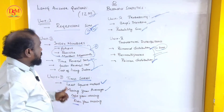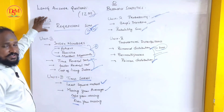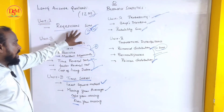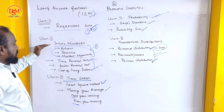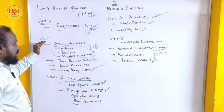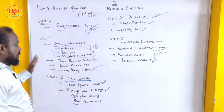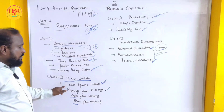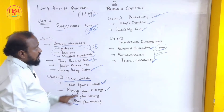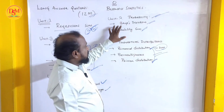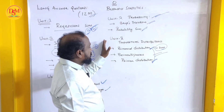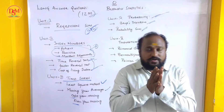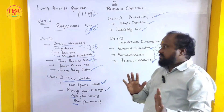Let me repeat once again: Unit 1 — Regression, 12 plus 4 marks, compulsory. Unit 2 — Fisher's, Paasche's, Laspeyres' related sum, and Cost of Living Index. Unit 3 — Time Series, Least Square Method, Moving Average. Unit 4 — Bayes' Theorem, Probability. Unit 5 — Binomial Distribution, Poisson Distribution.